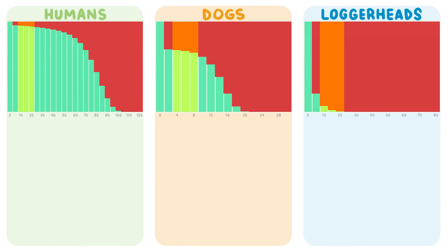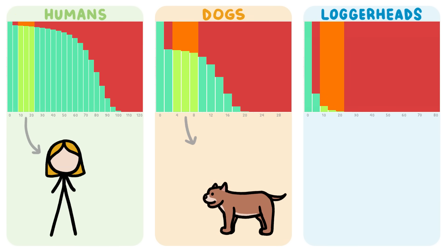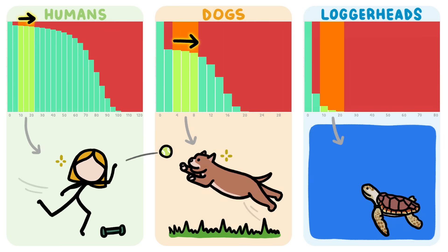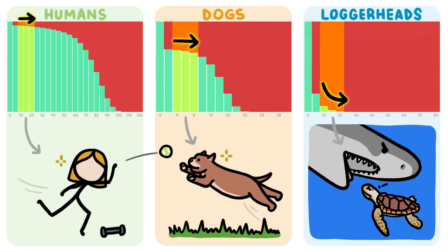The bars in the early middle part of the distribution represent early adulthood. For humans and dogs, the bars here stay pretty much the same height, as they are less likely to die when they are both big enough to defend themselves and not yet slowed by age. But for sea turtles, the trend continues to curve downward, which suggests that for them, this part of life is still riddled with dangers.